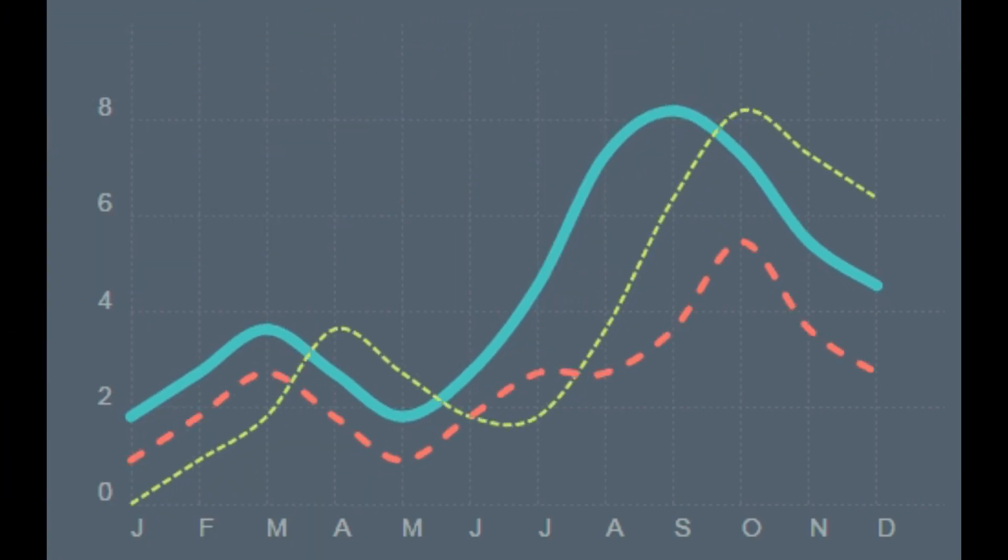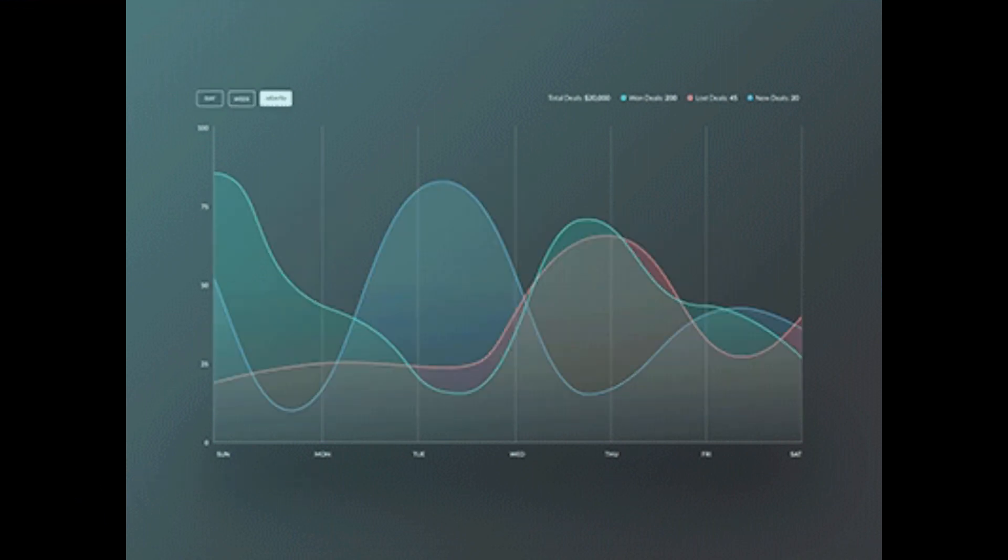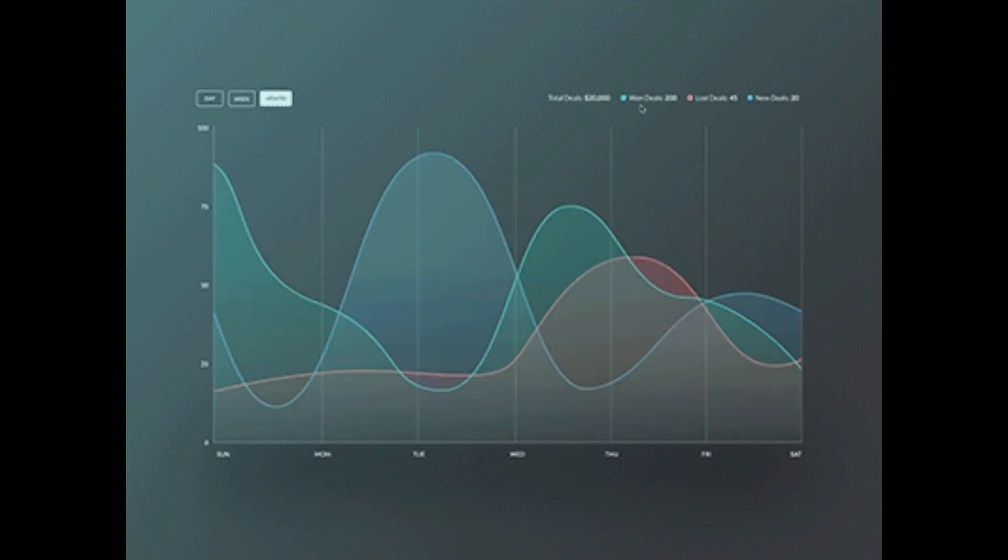The data points can be divided into two categories: trend and seasonality. Trend refers to the long-term behavior of the data, while seasonality refers to the cyclical patterns that occur within the data.